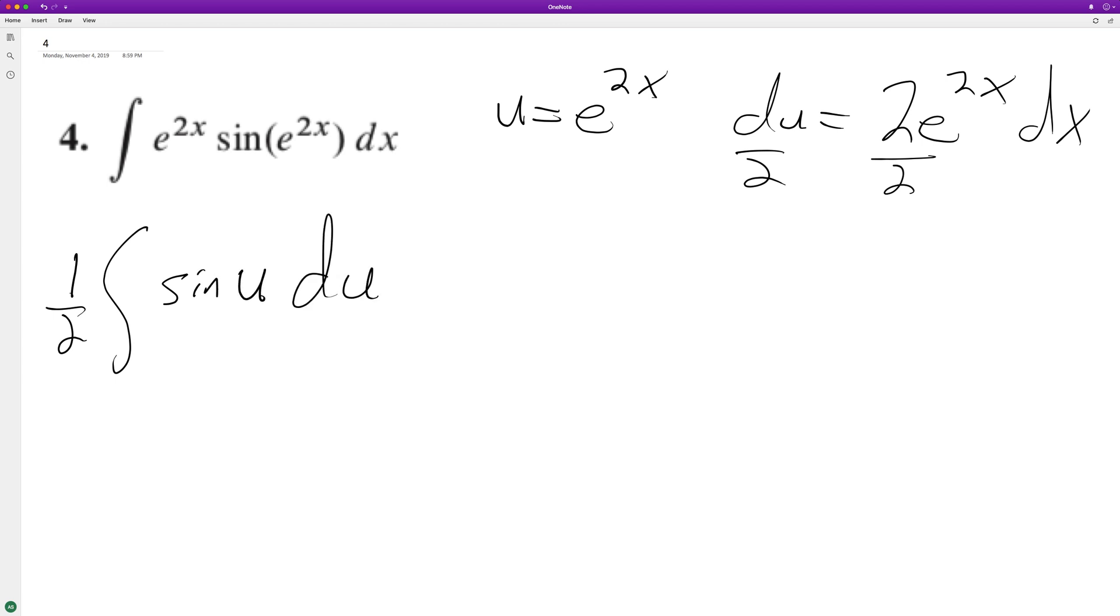So the integral of sine of u is going to be negative 1 half cosine u plus c. And now we can sub back in.